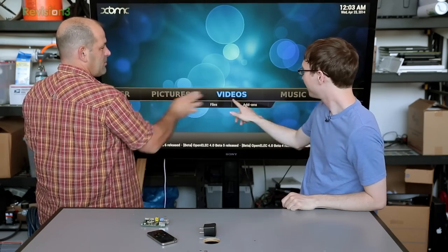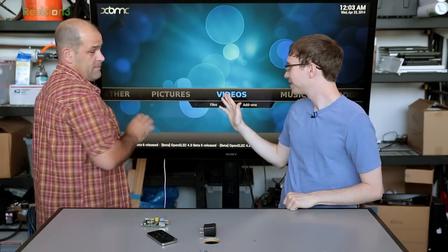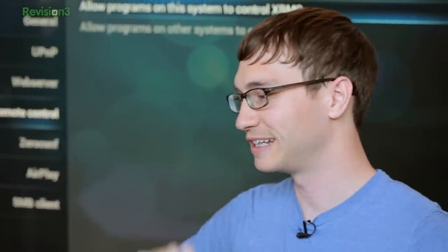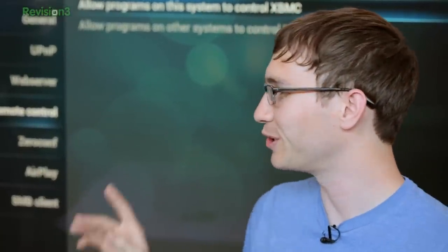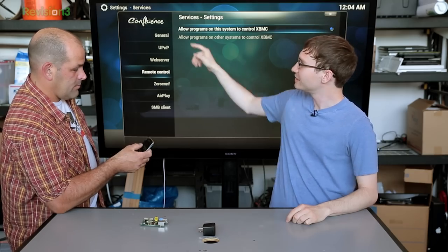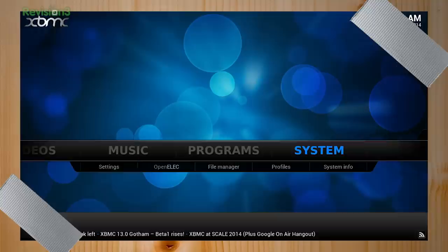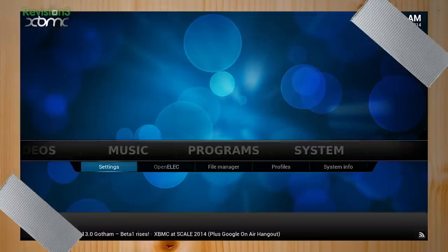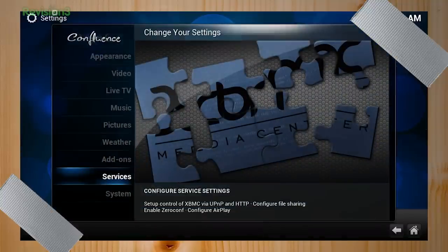But there's one more thing we're going to need to actually make this practical. A controller. You could use a USB keyboard, but that would be inconvenient. And we like technology, so what you can do is in XBMC, if you go into the settings, there's an option for remote control. So you go to system, settings, services, and then remote control. We already have it enabled, but you can select that, allow programs to use this to control XBMC.